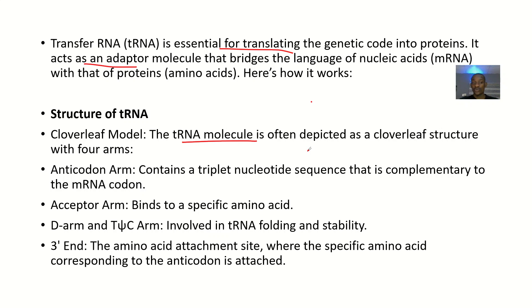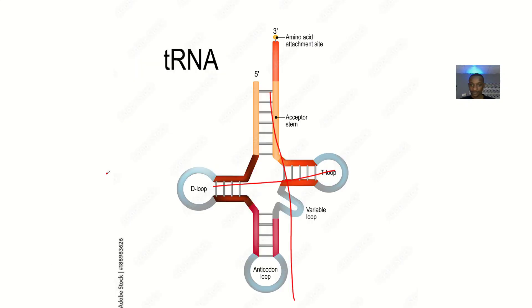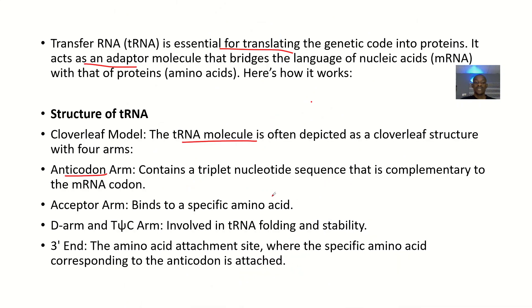The four arms include the anticodon arm, also called the anticodon loop. The anticodon loop contains a triplet nucleotide sequence that is complementary to the mRNA codon.